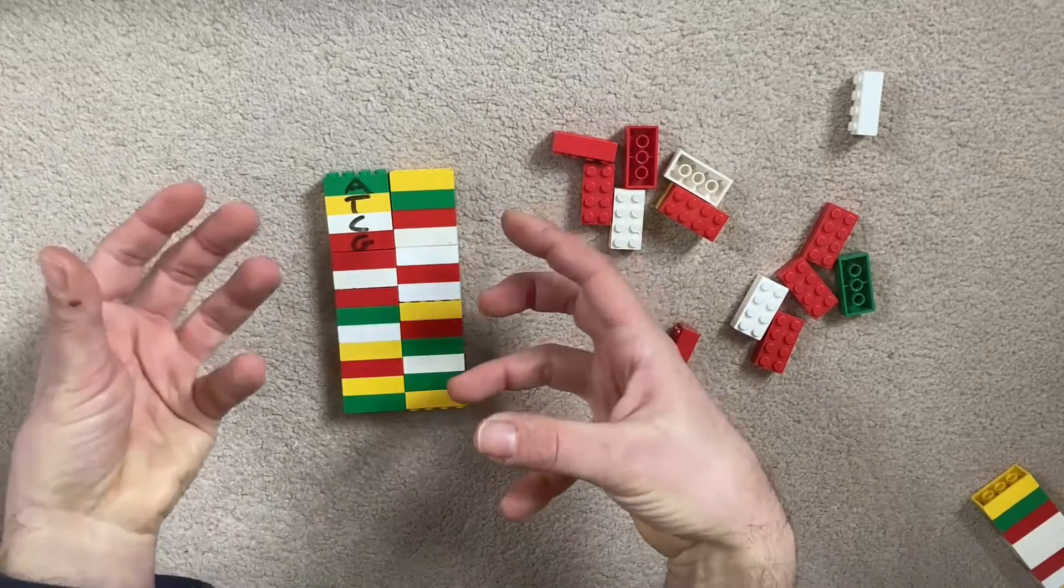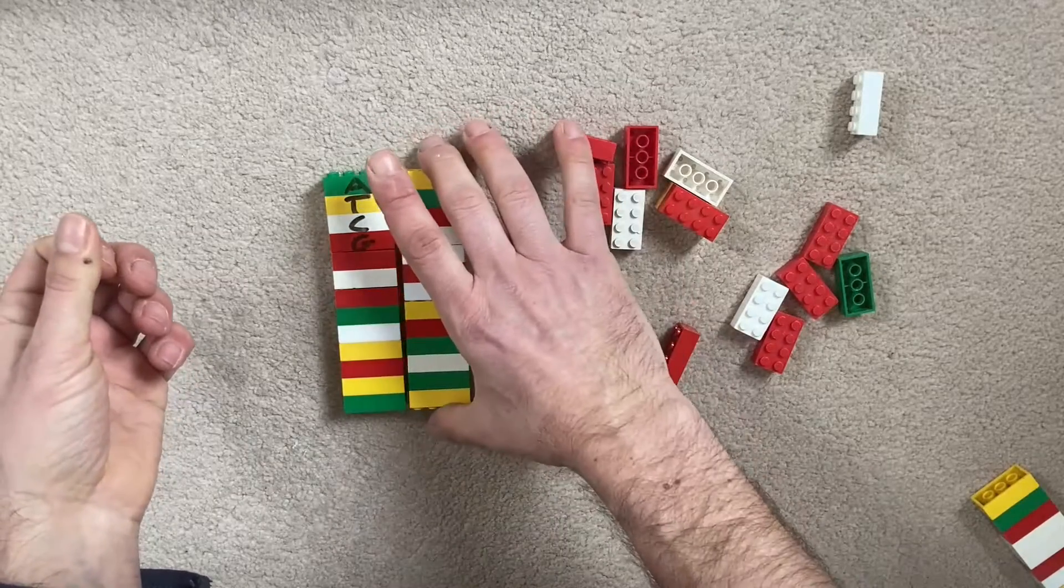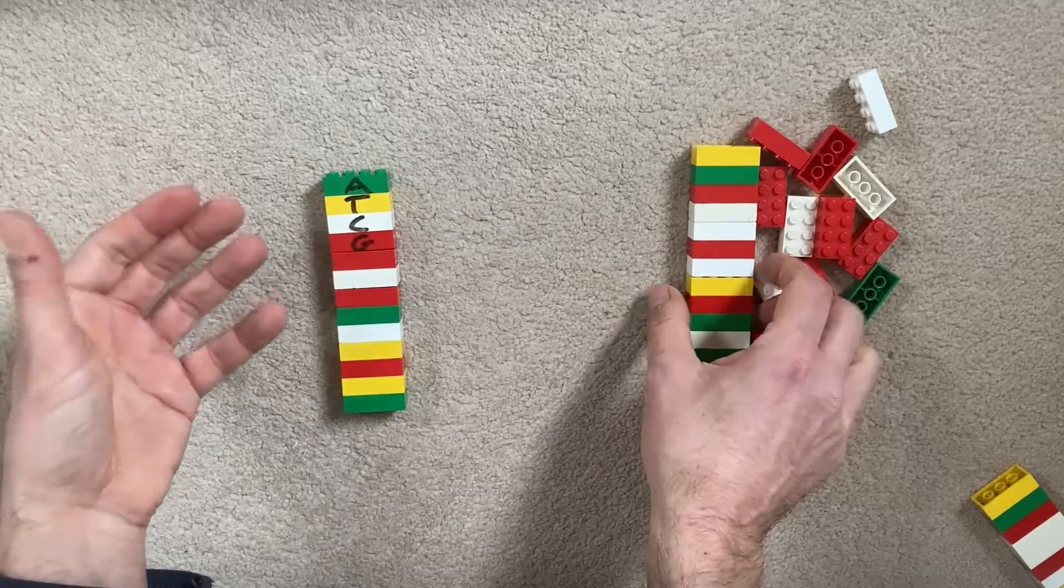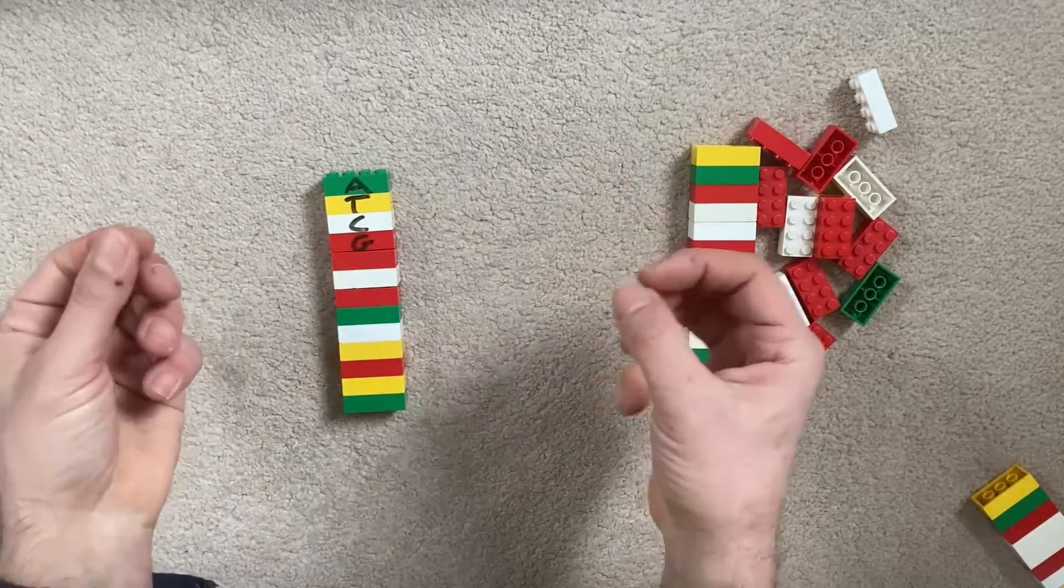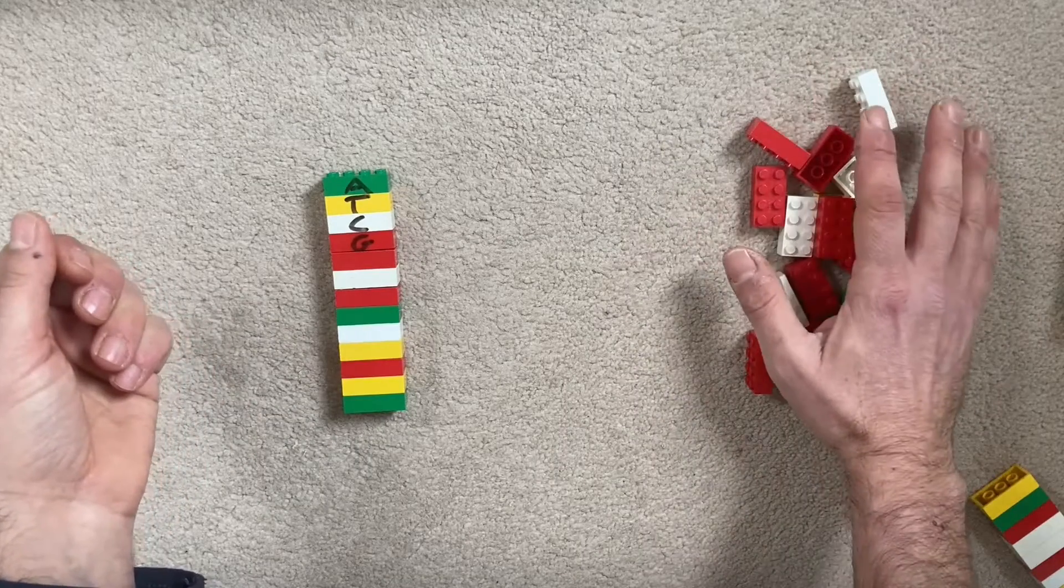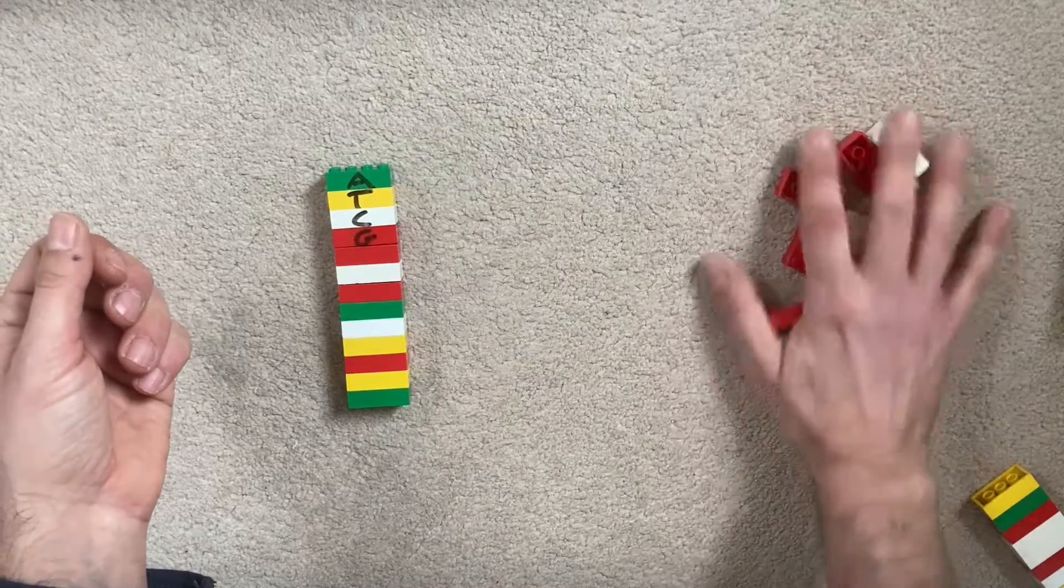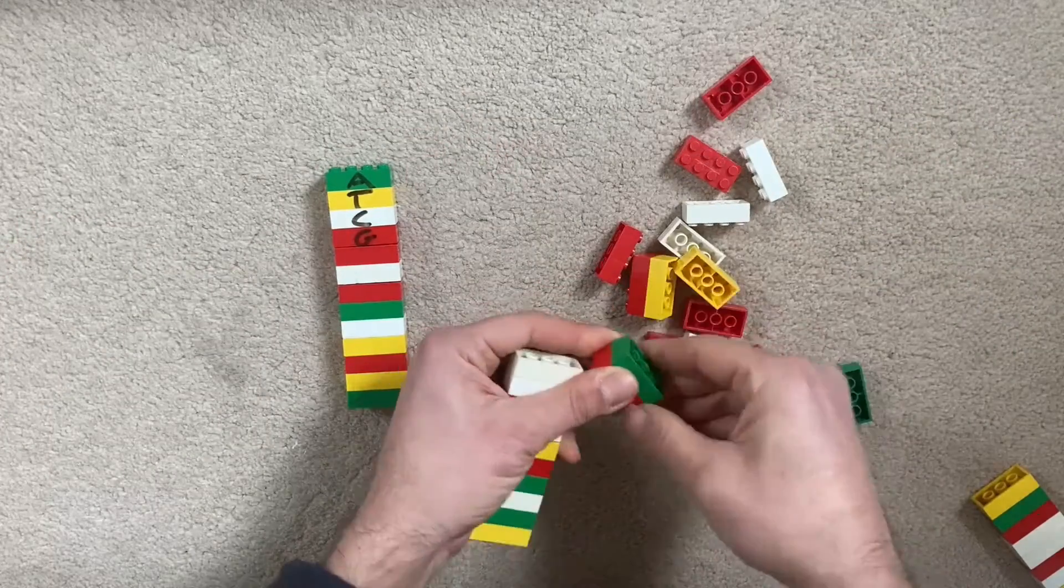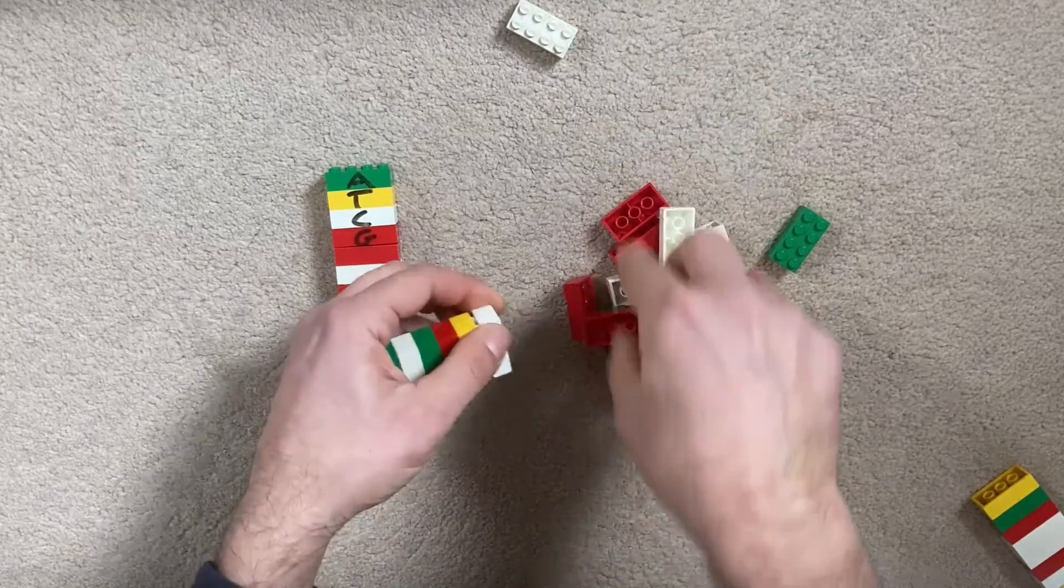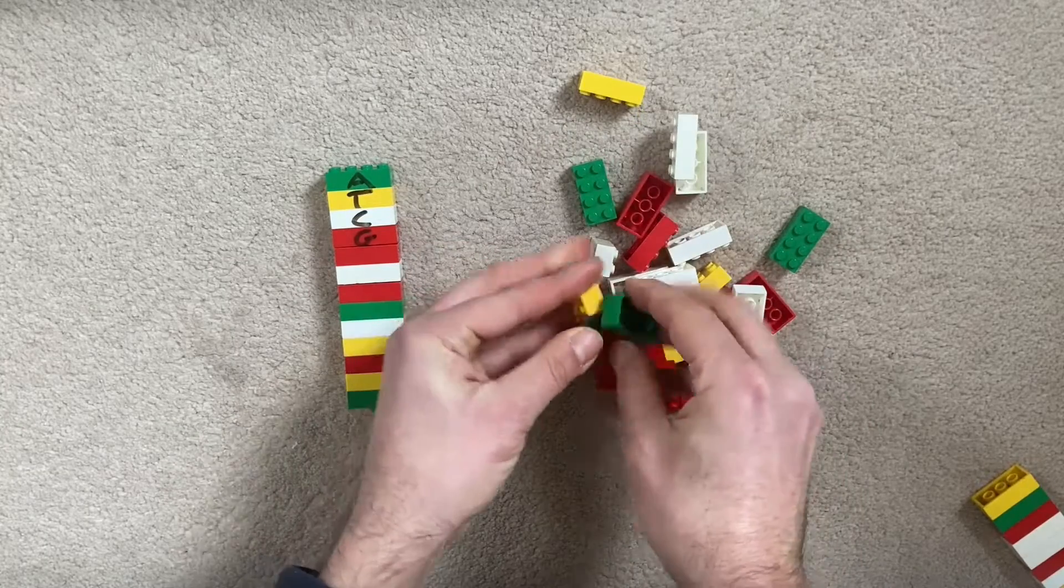Now when we want to sequence DNA, when we want to read the DNA sequence, the order in which these appear, we actually use some of that cellular machinery and we use it to our own ends. So what happens though is something slightly different. We start out with a single strand of DNA and we start out with a whole load of bases like these, all mixed together in our reaction vessel, in our tubes, like so.